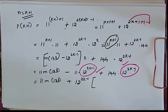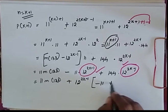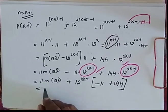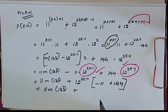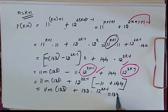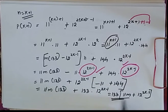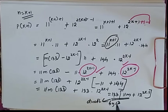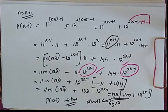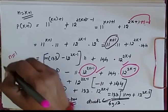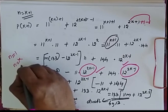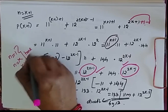This gives us 11 × 133m + 133 × 12^(2k-1). Taking 133 as a common factor: 133 × (11m + 12^(2k-1)). This is a multiple of 133, so it is divisible by 133. Therefore P(k+1) is true. We have proved for n = 1, assumed true for n = k, and proved for n = k+1. Therefore, it is true for all values of n.